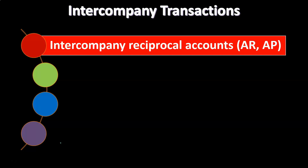If we have intercompany reciprocal accounts as a type of transaction — for example, we could have accounts receivable and accounts payable involved — meaning in a parent-subsidiary relationship that we're going to be consolidating, we might have a receivable on the books for the parent and a payable on the books for the subsidiary that we would then have to reverse. There could also be notes payable and receivable that are reciprocal. These are pretty basic and easy for the most part because they should be equal and opposite on the two sets of books, and therefore an easier thing to remove.